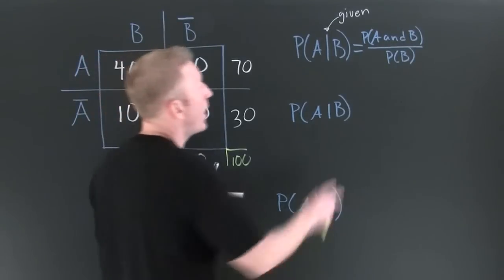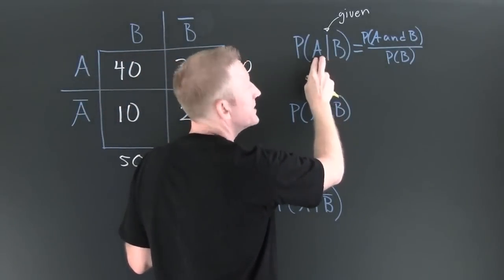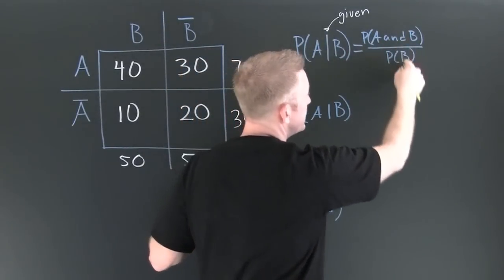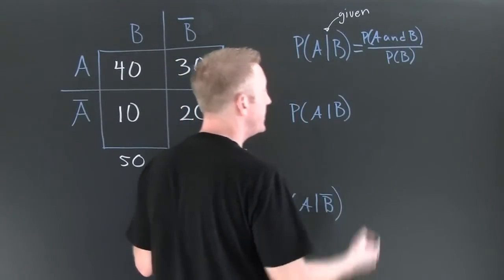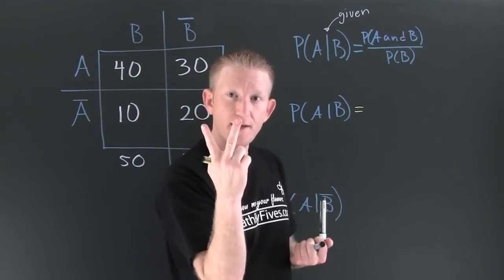So now what do I want to do? I want to calculate the probability of A given B. That's going to be the probability of A and B divided by the probability of B. Let's go ahead and do this two ways.